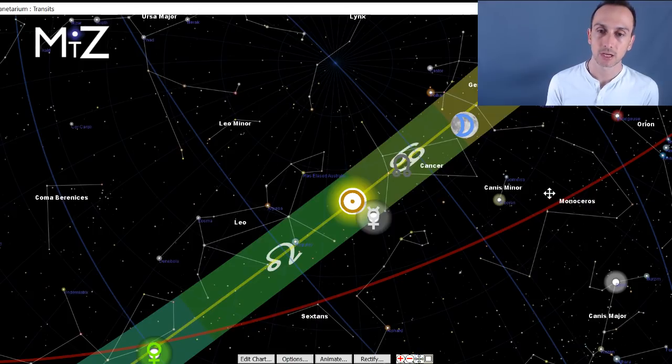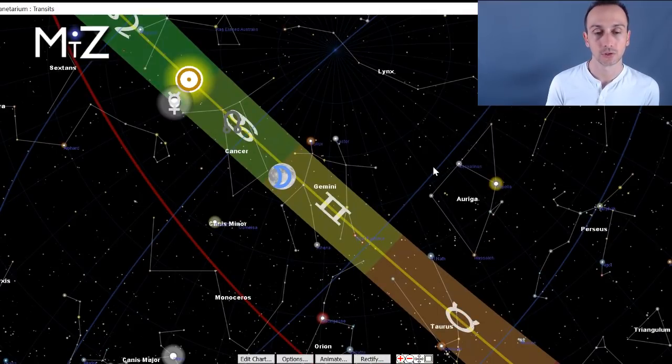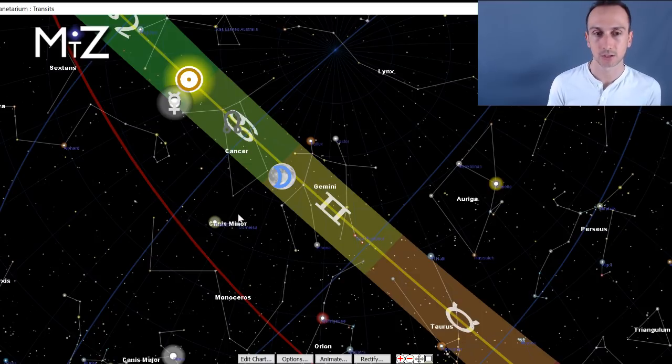So again, this channel is using the actual size of the constellations called true sidereal astrology. You will notice some of the signs are different in terms of what I'm mentioning from mainstream astrology. So if you're new to the channel, do check out that link down below.